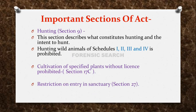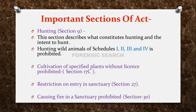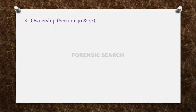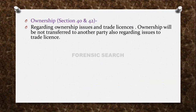Section 27 restricts any person from entering sanctuaries. In India, there are preserved areas such as sanctuaries and national parks, and Section 27 restricts any person in such sanctuaries. Section 30 deals with causing fire in a sanctuary, which is prohibited. Sections 40 and 42 deal with ownership issues and trade licenses — ownership of wildlife articles cannot be transferred to another party.